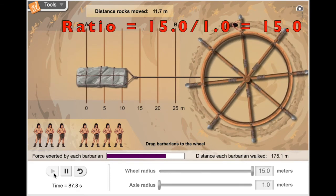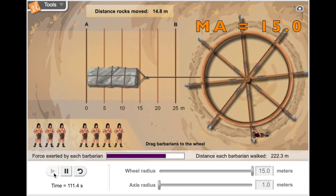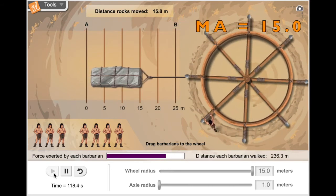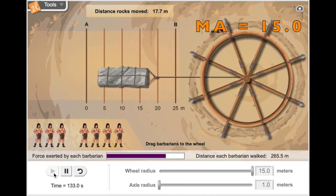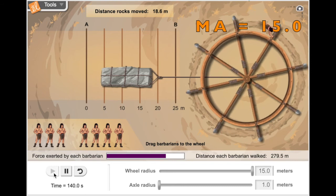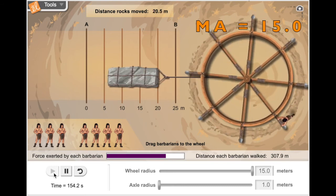Now, the wheel-to-axle ratio was 15. That means the mechanical advantage is 15. So he should have to walk 15 times the distance that the load is moving. But he'll only have to use 1 15th of the force.